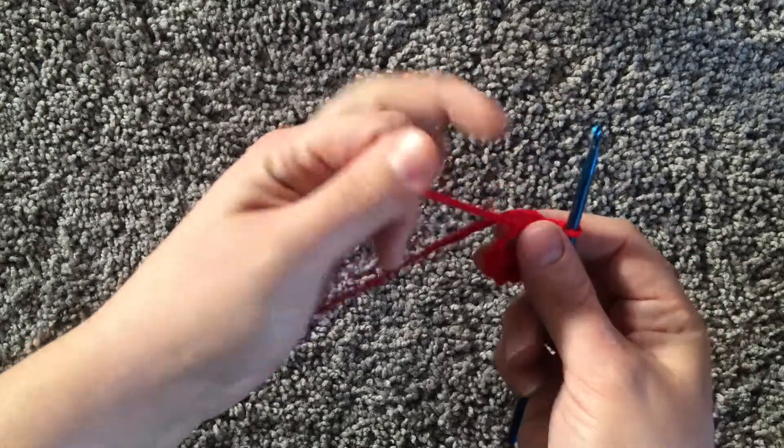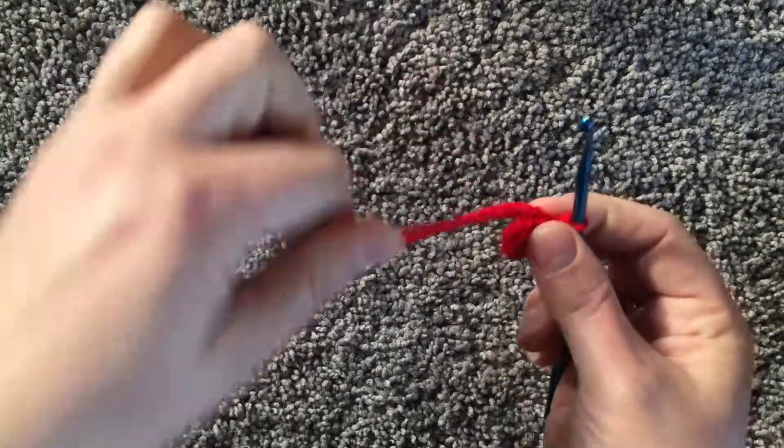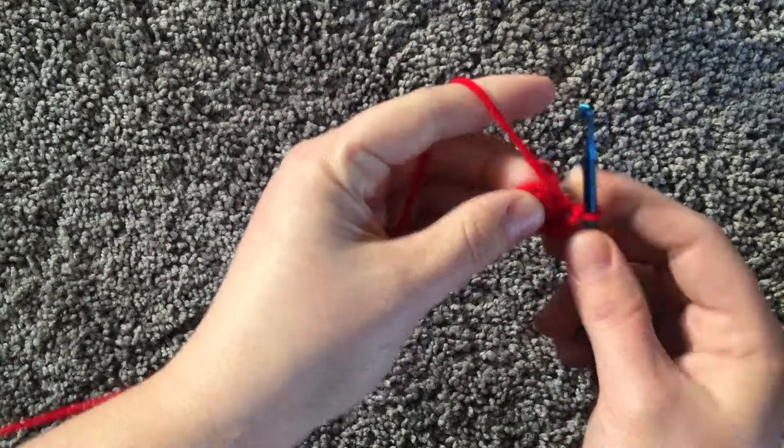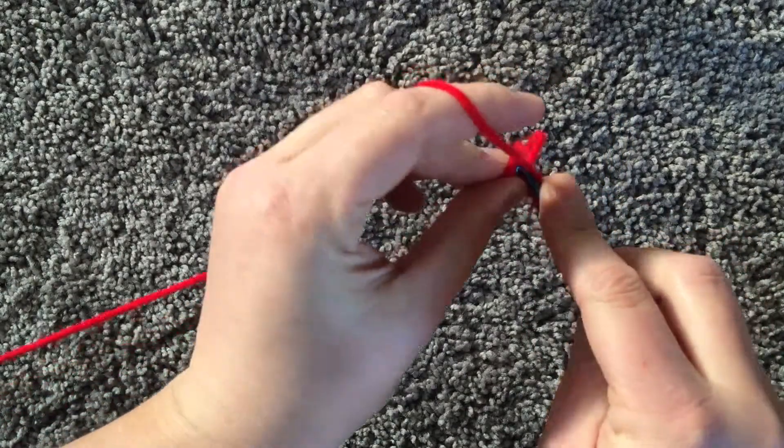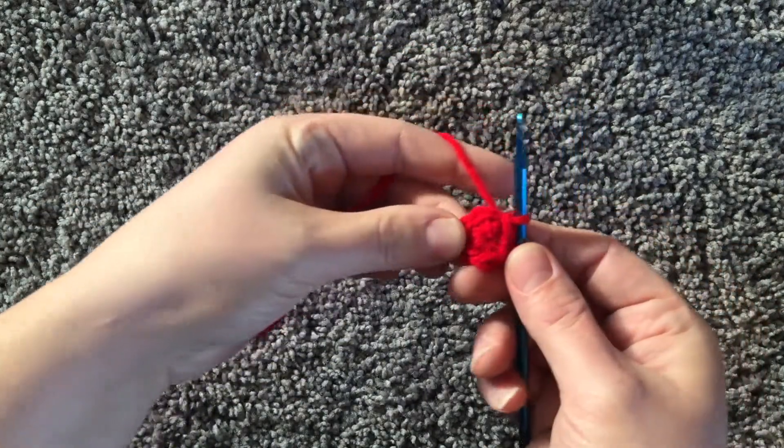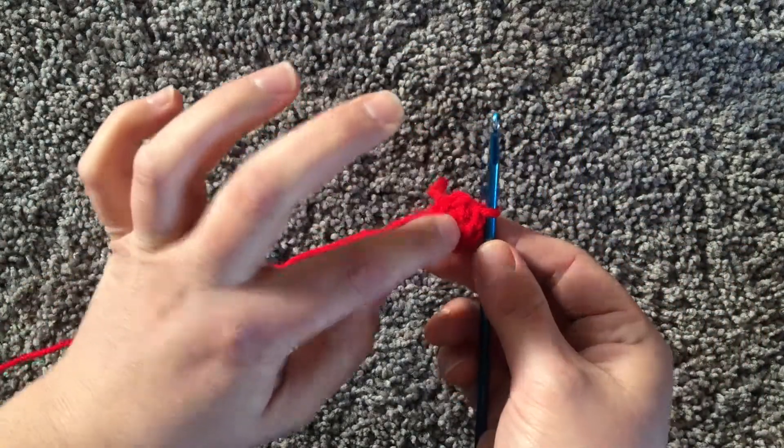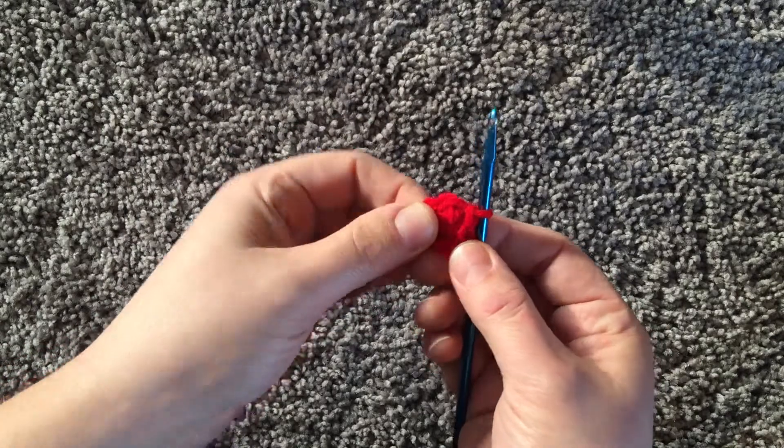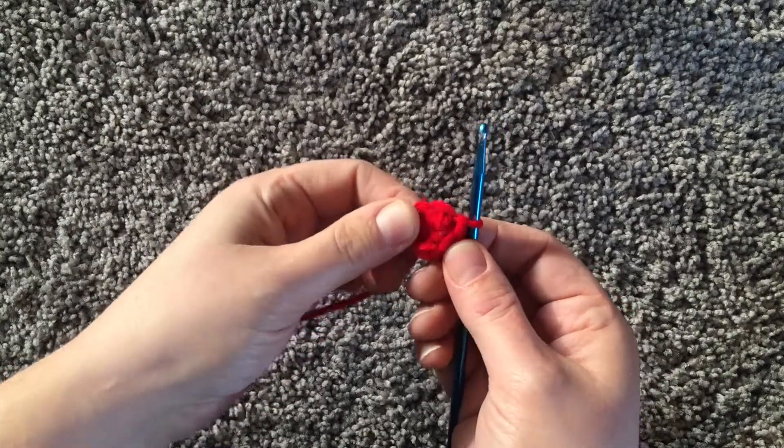Once you have that set, pull your yarn tight, and then I do a slip stitch at the very beginning just to complete my magic circle. The best part about this is you have absolutely no hole in the middle when you're completing projects like hats or toys.